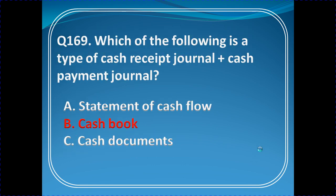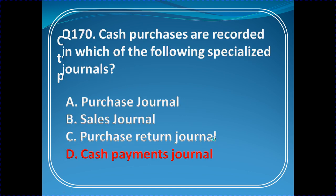Question 169: Which of the following is a type that combines cash receipt journal and cash payment journal? Cash received from debtors goes into the cash book. You have single column cash book, double column cash book, and triple cash book. So cash book is the right answer.